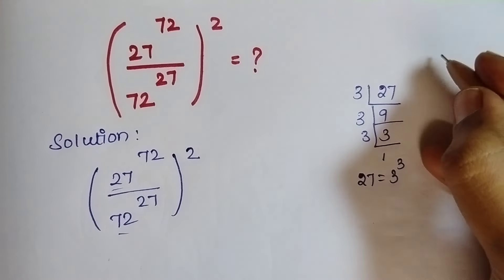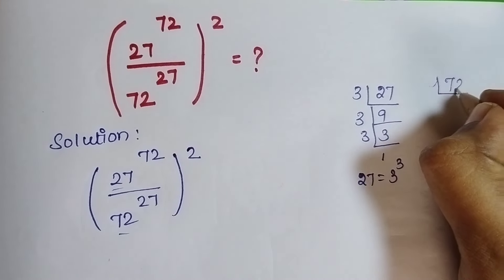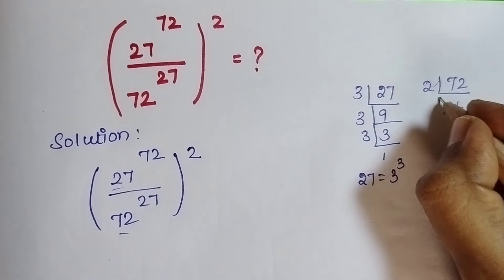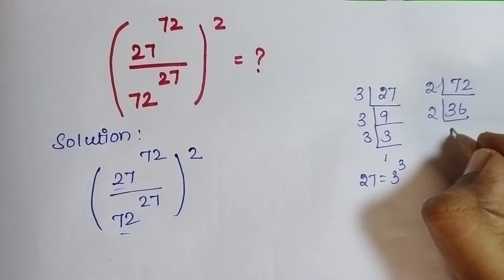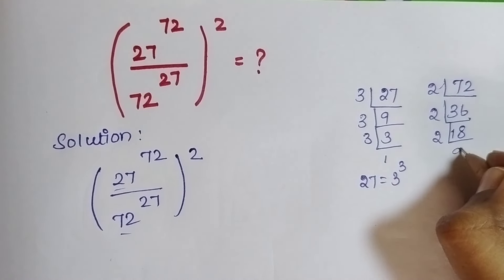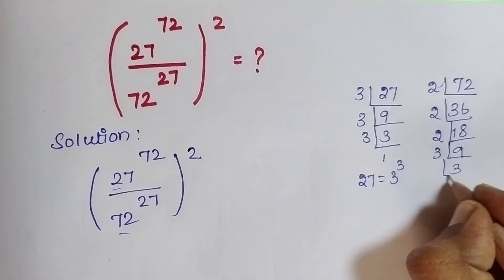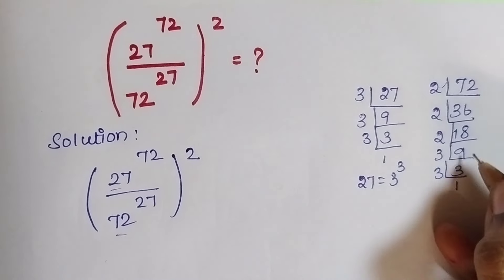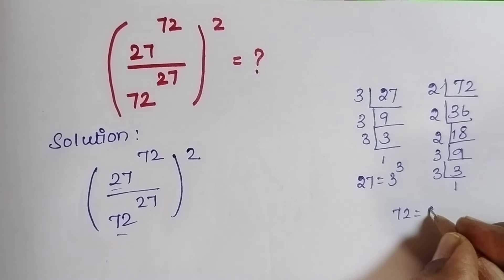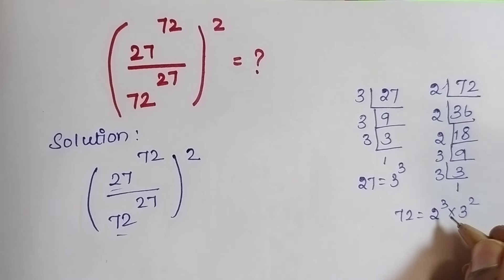Similarly, we need to find the factorization for 72. Dividing by 2: 36, then 18, then 9. Then dividing by 3: 3, then 1. Therefore, 72 is equivalent to 2 cubed times 3 squared.